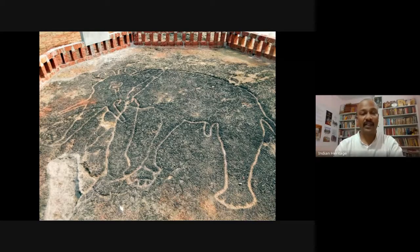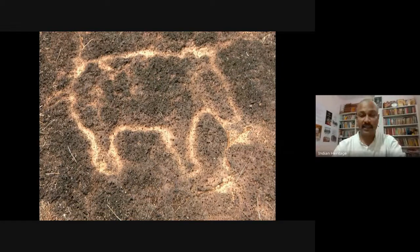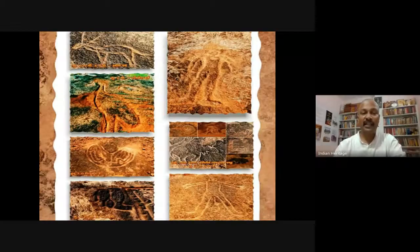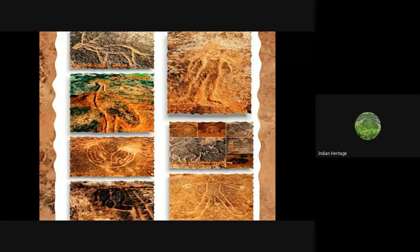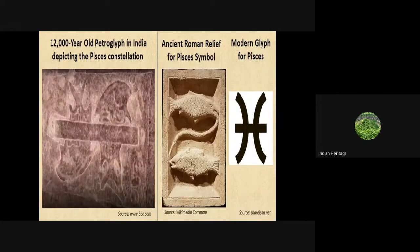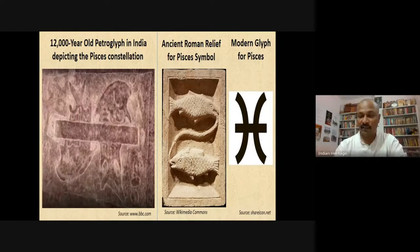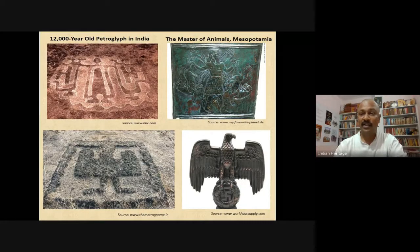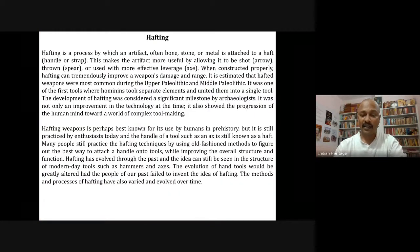From Ratnagiri district of western Maharashtra, these petroglyphs show human, bird, and animal figures. Some interesting figures include a 12,000-year-old petroglyph depicting constellations — the same constellation seen in ancient Roman reliefs and modern glyphs. Here we can also see 'master of animals' figures similar to Mesopotamian imagery, sometimes described as kings and sometimes as gods of animals. Similar figures appear later in Indus Valley Civilization.